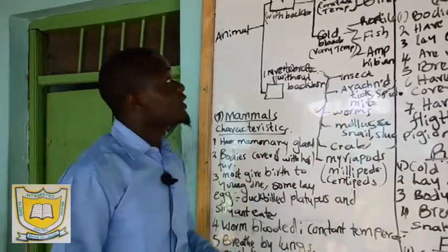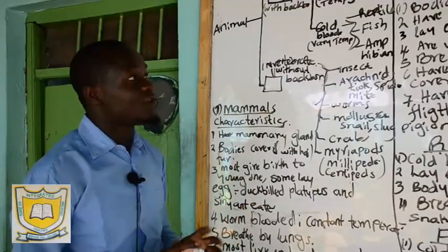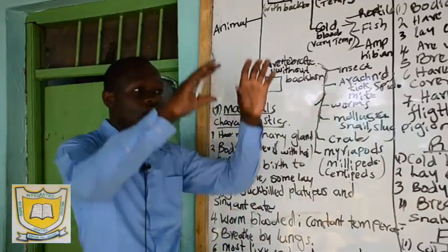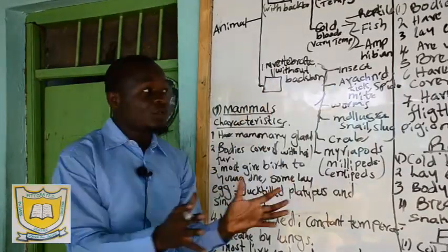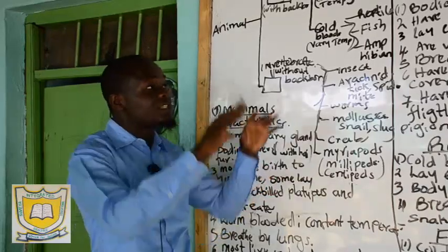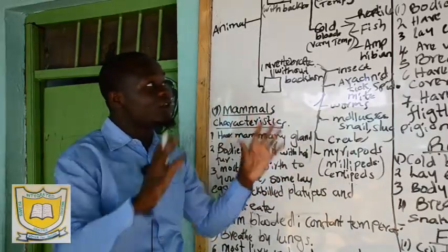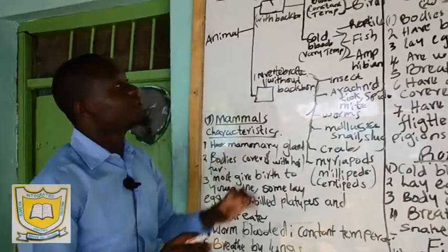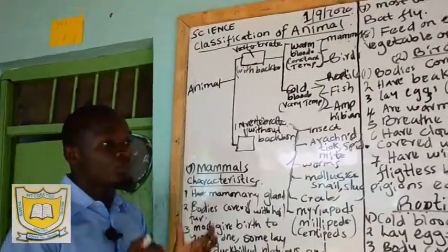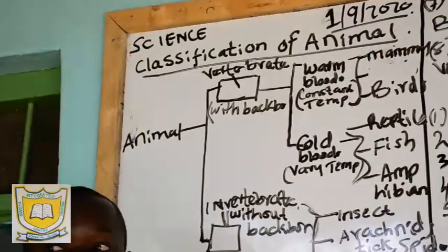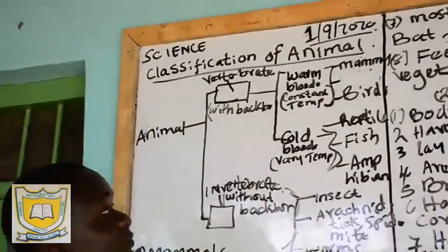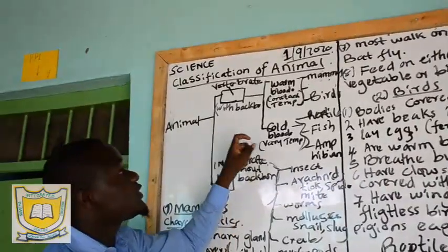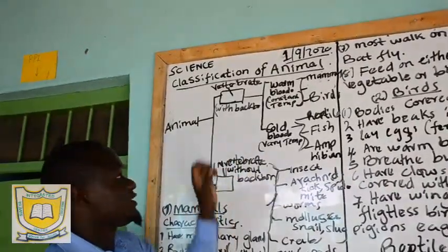Today we are going to cover classification, but now considering all animals generally — not considering their products. When we classify animals, classification is the grouping of animals according to either their similarities or differences. Here we are going to classify them considering their similarities.